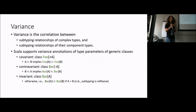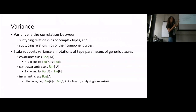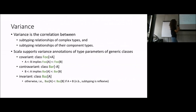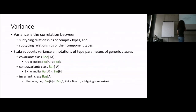I will first quickly review the concepts, then move to the Scala worksheet to show a bit of how this works in practice. So, what is variance? Variance is a correlation between the subtyping relationship of complex types and the subtyping relationship of their component types. This is taken from the Scala homepage.